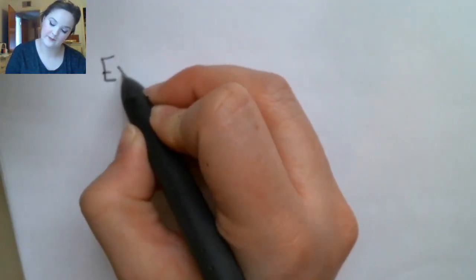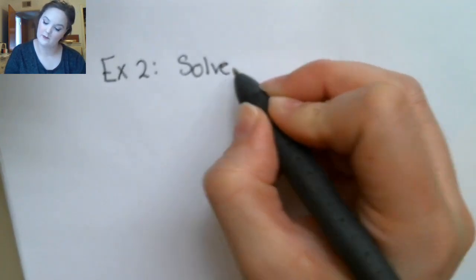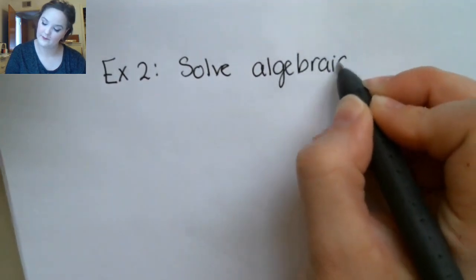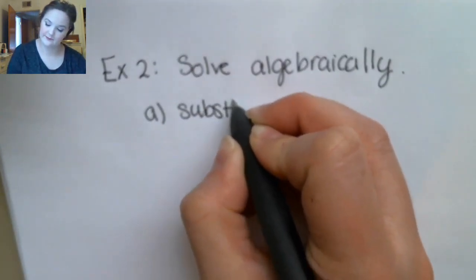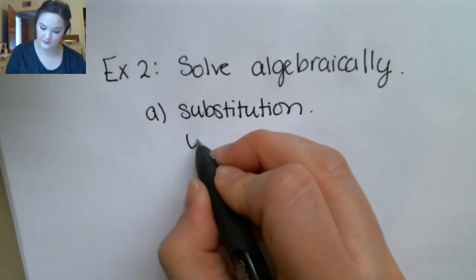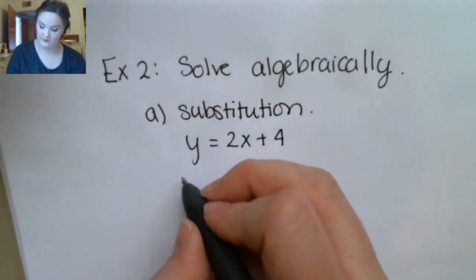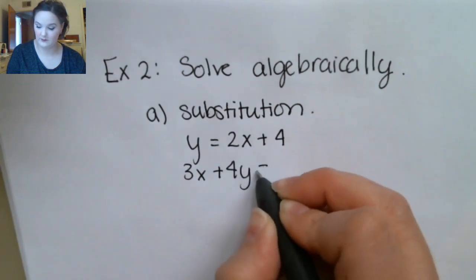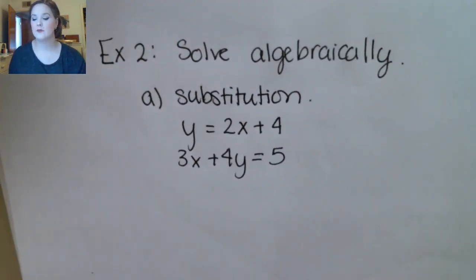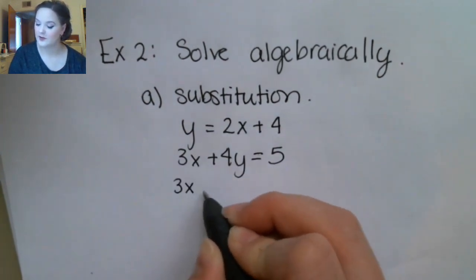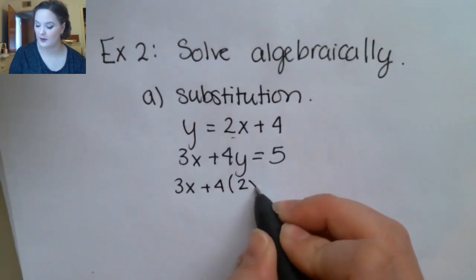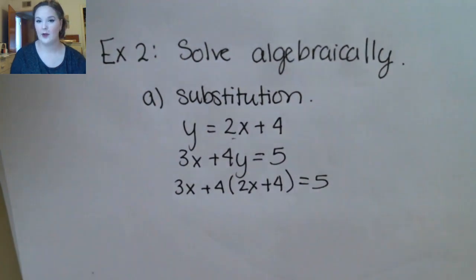Now let's look at the two algebraic methods for solving these. The first method is substitution. The basis of this method is isolating one variable in one of the equations and then substituting that expression into the other equation. So I'm going to substitute in for y my expression 2x plus 4. Now I have a single equation with one variable, just x, and I'm going to solve for x.